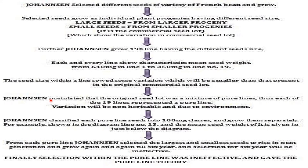Johannsen postulated that the original seed lot was a mixture of pure lines, and thus each of the 19 lines represented a pure line. Variation would be non-heritable and due to environment. He classified each pure line seed into 100 mg classes and grew them separately. He selected the largest and smallest seeds to raise the next generation, repeating this up to the sixth generation. The selection for six years was ineffective, giving rise to the pure line theory.